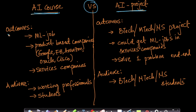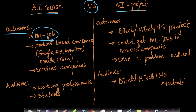First, let's understand the expected outcome if you take the Applied AI course. The final outcome of the Applied AI course is to get a machine learning job. At the end of this course you have all the tools at your disposal to get a machine learning job at product-based companies as well as services companies.